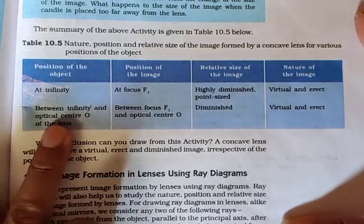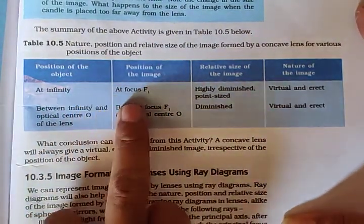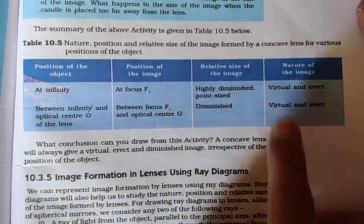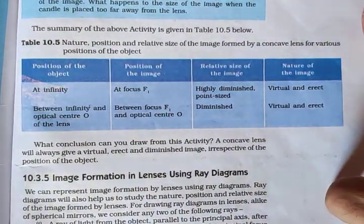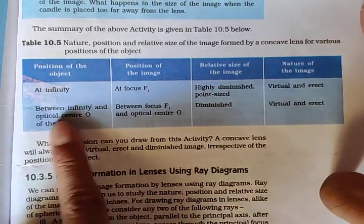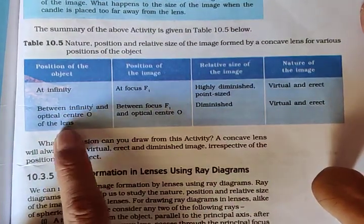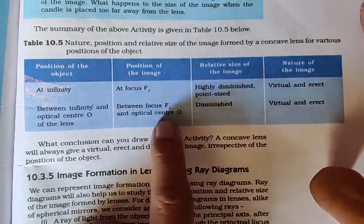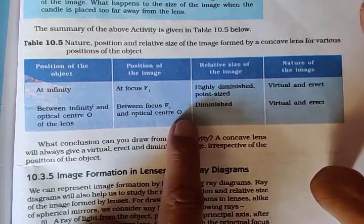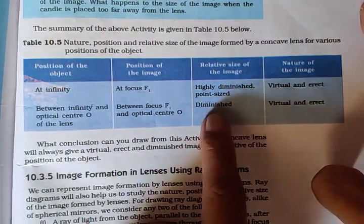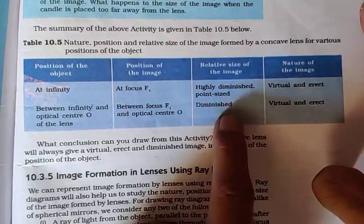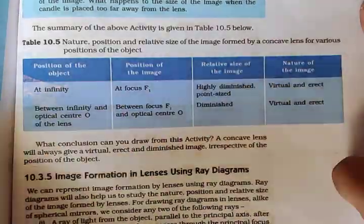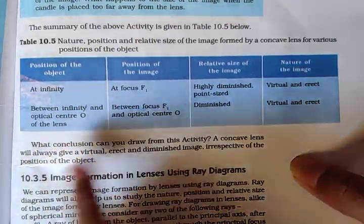For a concave lens: at infinity, the image is at focus F1, highly diminished and point-sized — virtual and erect. If the object is placed anywhere between infinity and the optical center O, the image forms between focus F1 and optical center O — diminished, virtual, and erect. These are the characteristics for a concave lens.